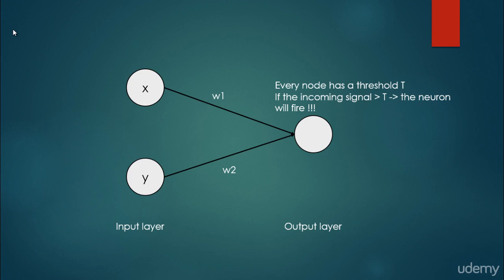So how will we calculate this incoming signal? We calculate the weights — we multiply each weight by the neuron value, then sum them up. If this signal is greater than the threshold, then the neuron will fire. For example, the threshold for this output neuron is equal to 2, so it is going to fire whenever the incoming signal is equal to or greater than 2.